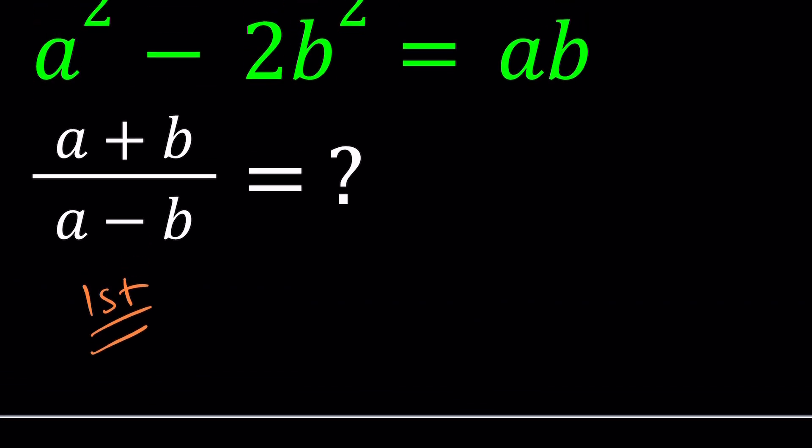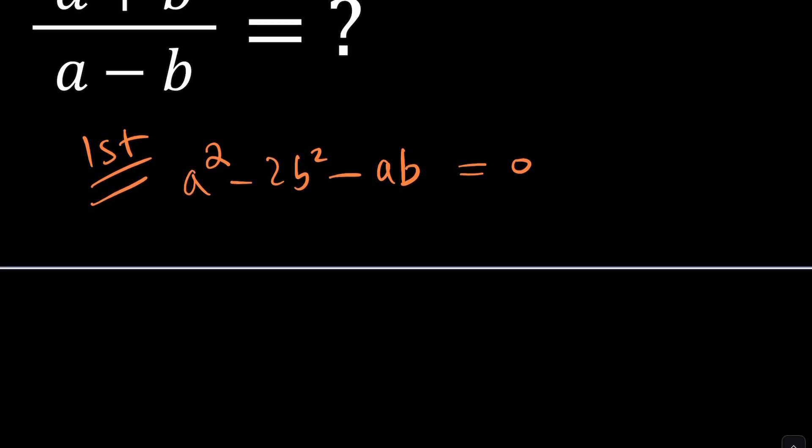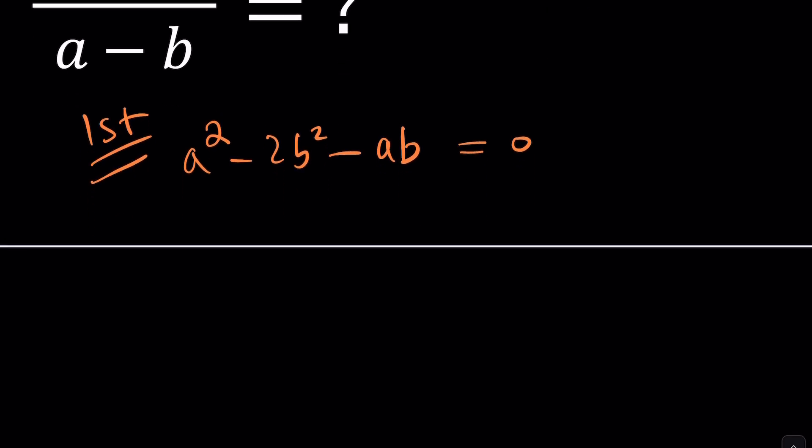For my first method, I want to put everything on the same side. So let's subtract ab from both sides so that we can set the whole thing equal to 0. Now here's what I'd like to do. I want to complete the square in this expression. In order to be able to do that, first of all, we need to notice which terms can make a perfect square.